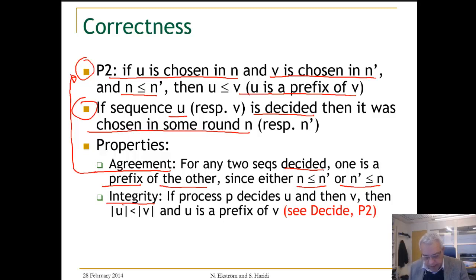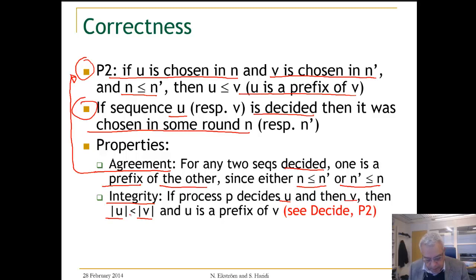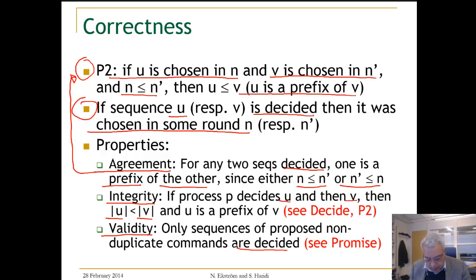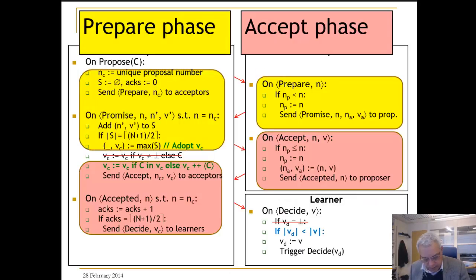Integrity says if P decides on U and then decides on V, then U is a prefix of V — we know this because the round number of V is higher than the round number of U. Validity says only sequences of proposed non-duplicate commands are decided; from the promise response, a new command is added only if it is not in the sequence that has been previously chosen, as we see in this code here.